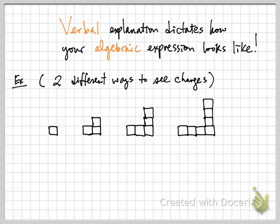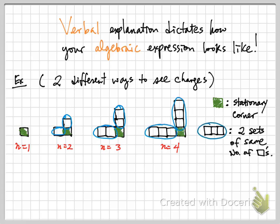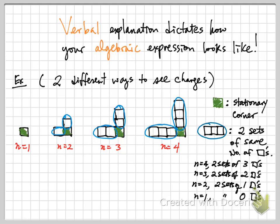Let's label the figures: n equals 1 for the first, up to n equals 4 for the fourth. One way to see it: as the figure evolves, each time there is a corner square that is stationary, and in each figure I always see two sets of the same number of squares. In the n=2 case, I see two sets of 1 square. In n=3, two sets of 2 squares. In n=4, two sets of 3 squares. That number of squares is always 1 less than n.